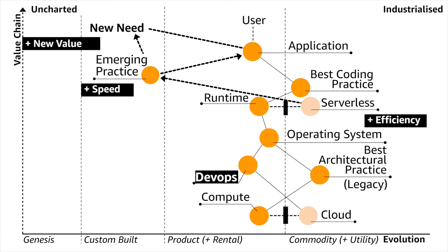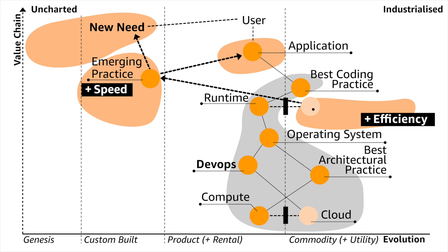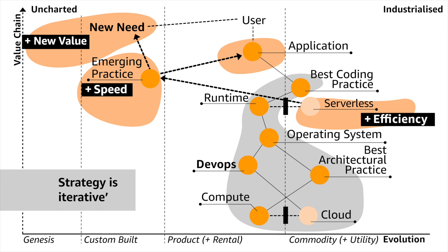Again, it's those three forces of efficiency, speed, and new value — you have no choice over this space. It's not a question of if you're going serverless, it's only a question of when. This also points out that the strategy we had in 2008 to 2010 was great for then, but a decade later it's the wrong place to focus. You need to focus on serverless, FinOps, and those new needs. What we focused on in 2008 to 2010 is now heading towards the new legacy. That points to another pattern: strategy is iterative. What worked ten years ago does not necessarily work today.